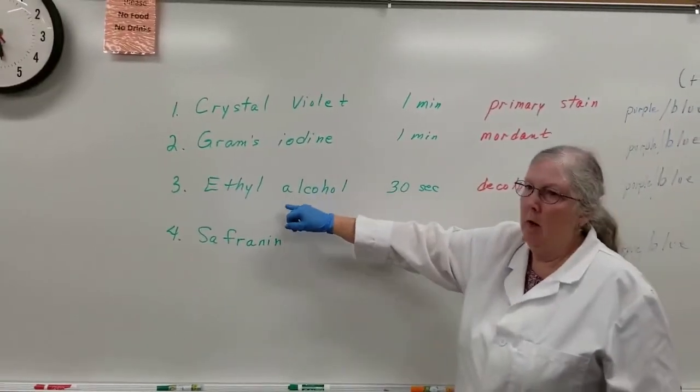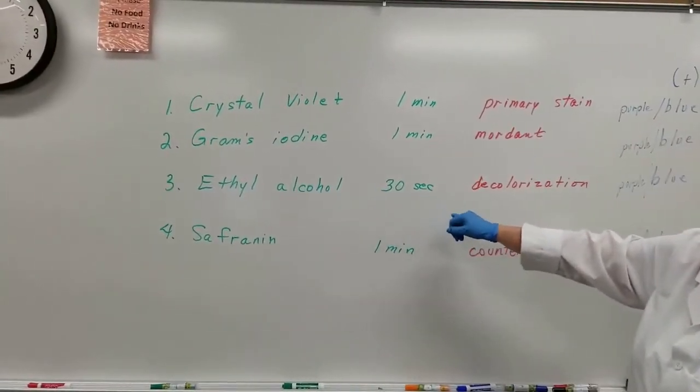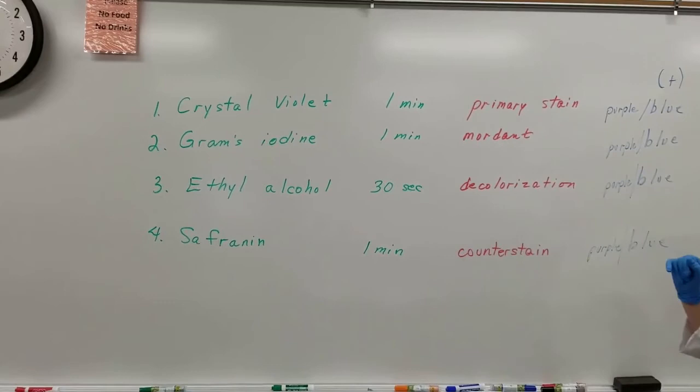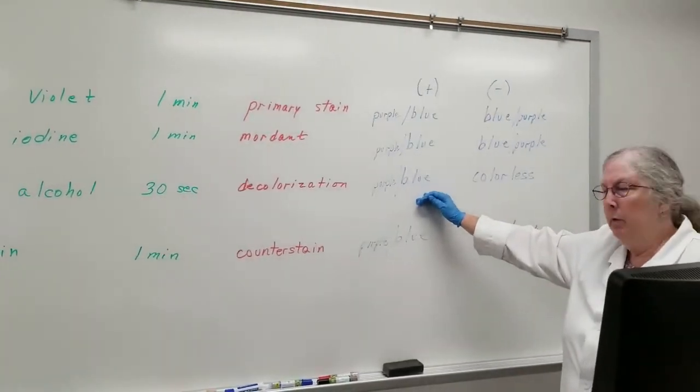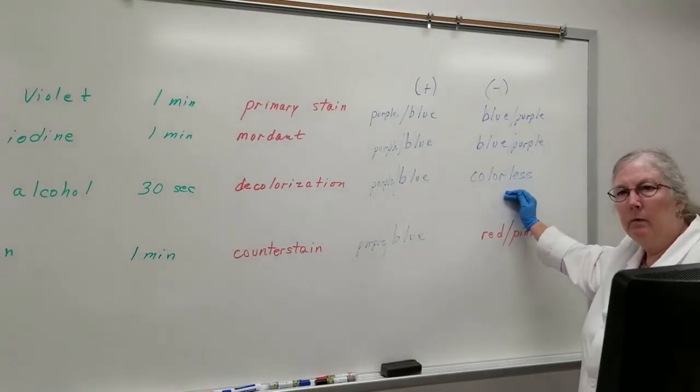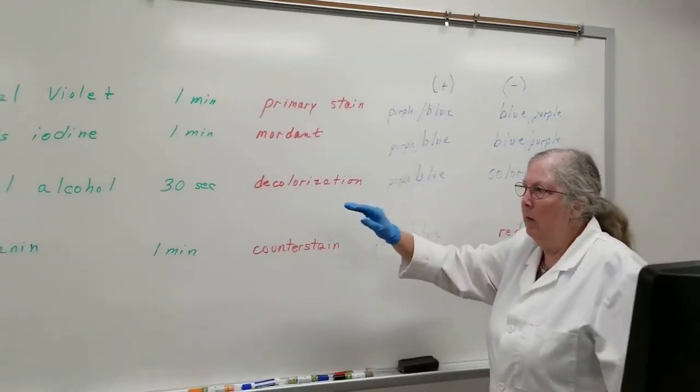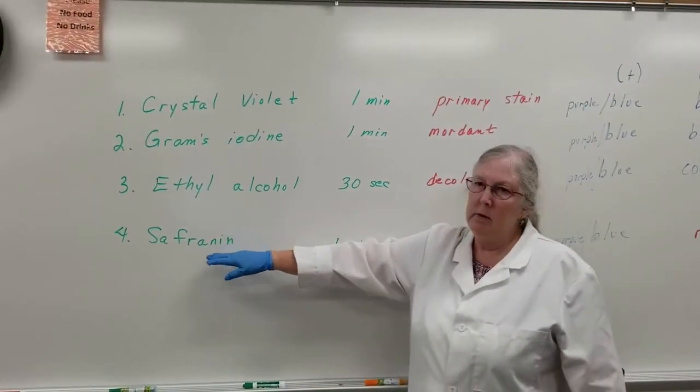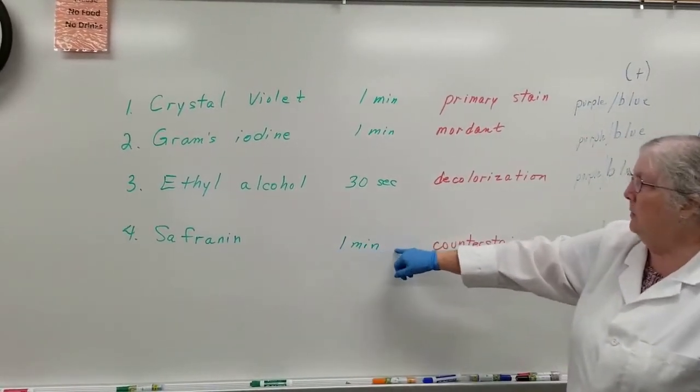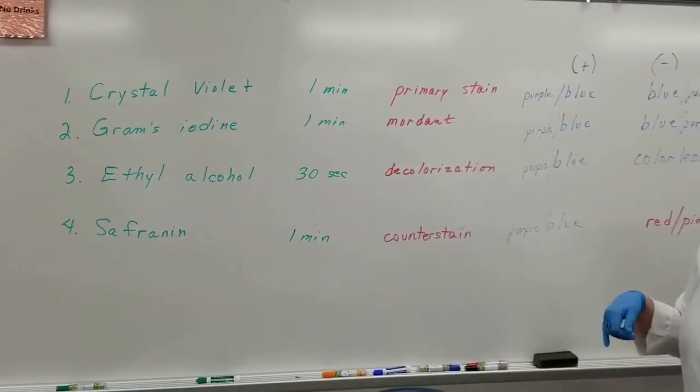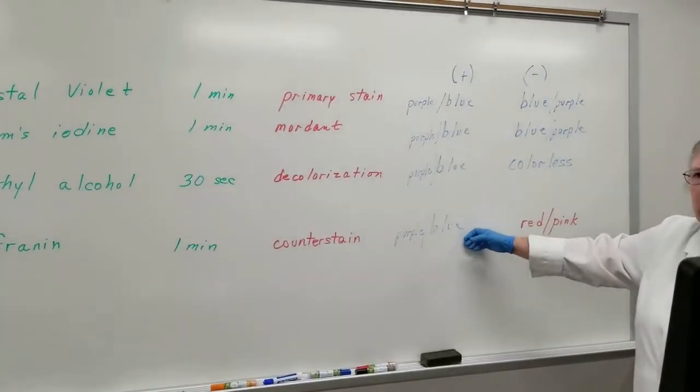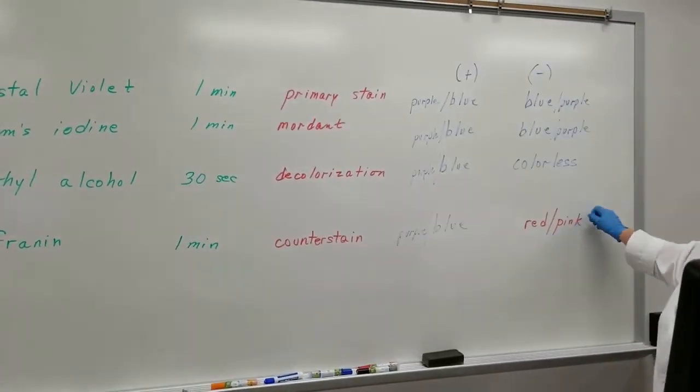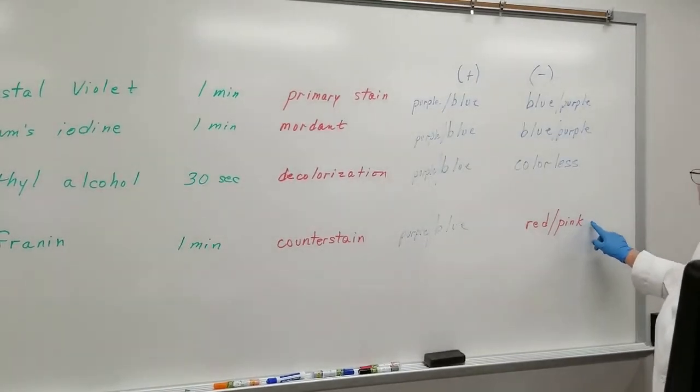Third step, you add the alcohol. It stays on only for 30 seconds. That's the decolorization step. Your gram-positives would look purplish blue at this point. The gram-negatives would be colorless. And then the fourth and final step is the safranin red, which will stay on for one minute. That is your counter stain or your secondary stain. Your gram-positives will remain purplish blue color. The gram-negatives will be a red pinkish color.